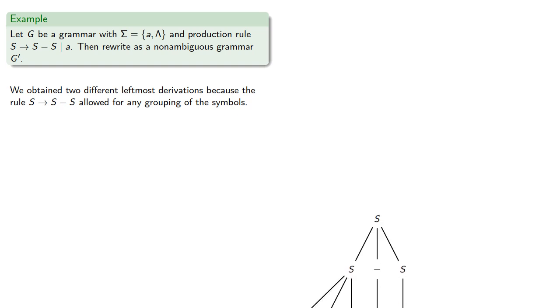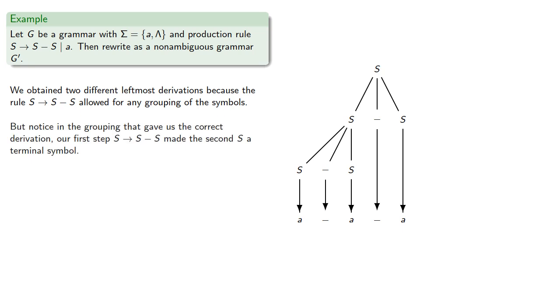We obtained two different leftmost derivations because the rule S produces S minus S allowed for any grouping of symbols. But notice that the grouping that gave us the correct derivation, the first step S produces S minus S, made the second S a terminal symbol.